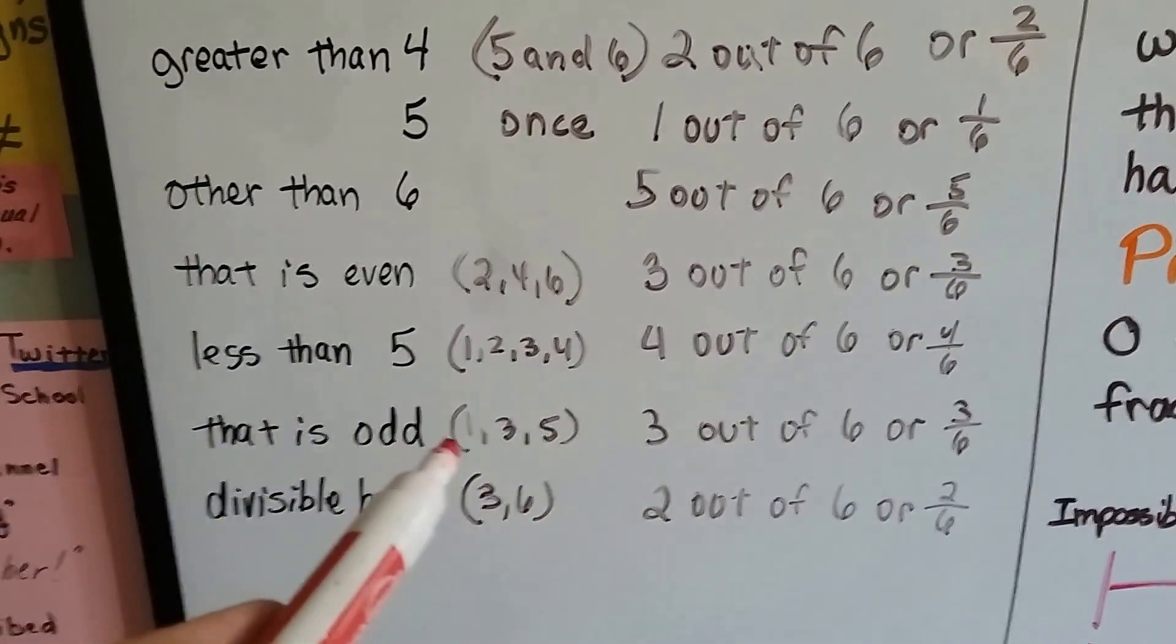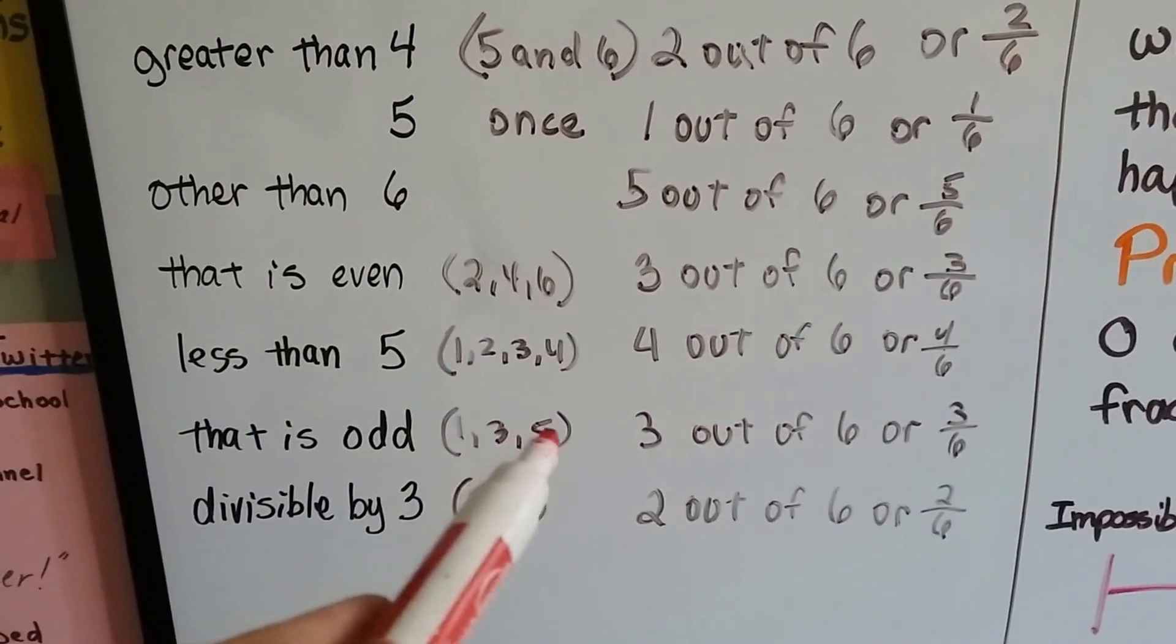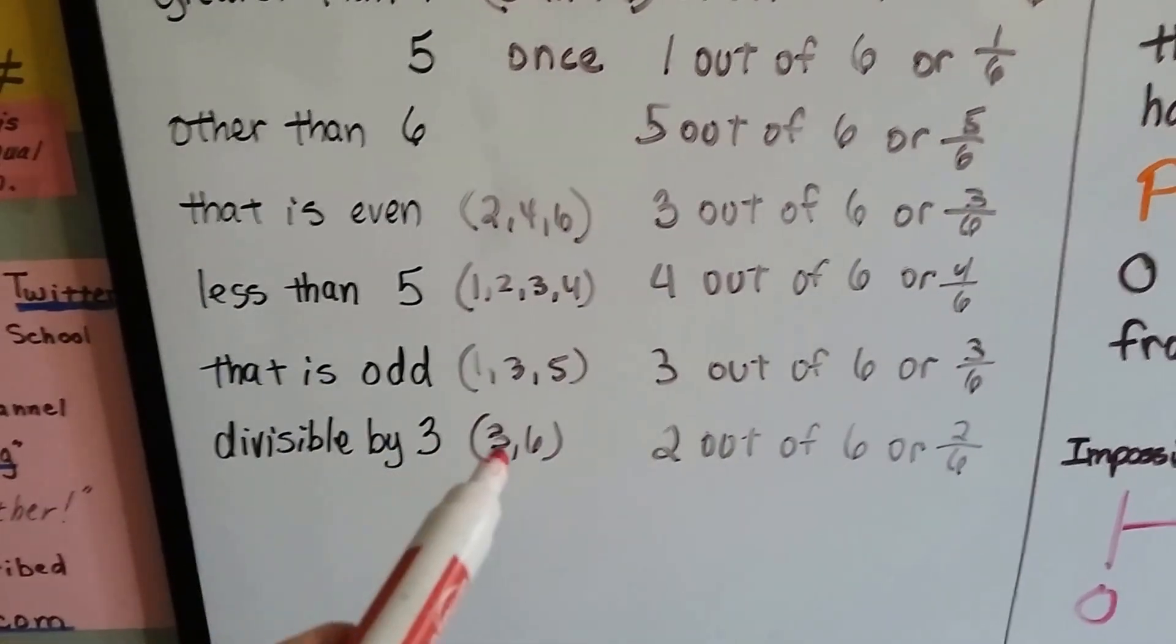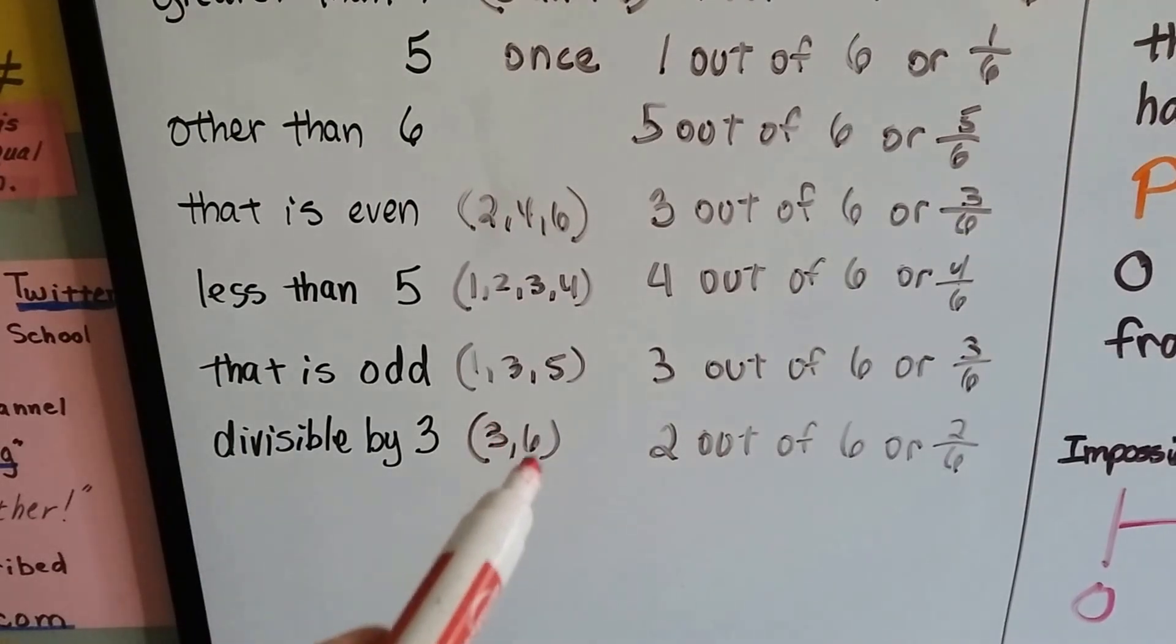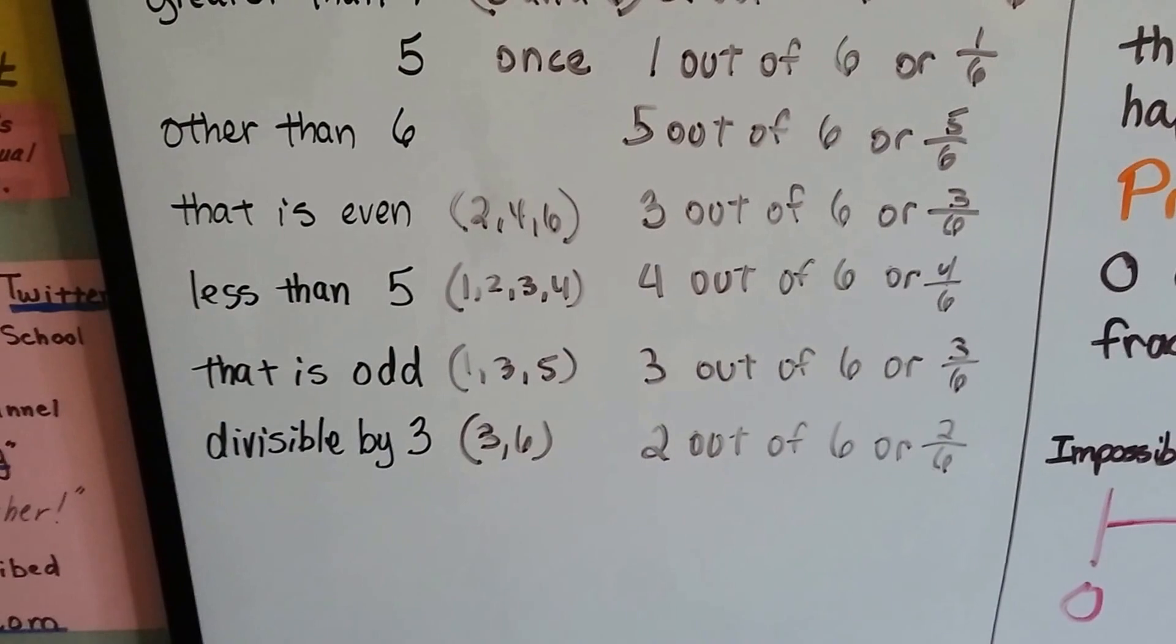The chance that it's odd, that it's a one, three, or five, would be three out of six chance, because that's three numbers out of the six possible ones. And the chance for it to be divisible by three, then it would have to be a three or a six. That would be a two out of six chance, or two-sixths, or one-third.